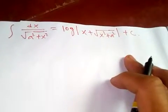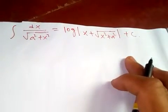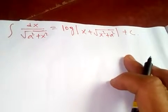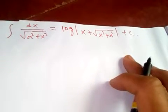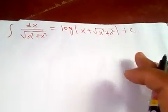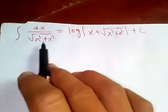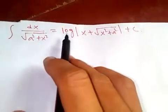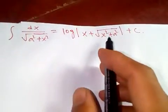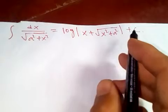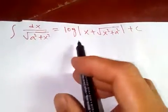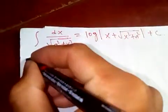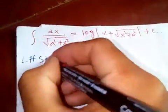Thanks for watching my video today. Let's discuss an important integral — a special integral. This is the integral of dx over square root of a squared plus x squared, which equals log of x plus square root of x squared plus a squared, plus a constant of integration, where a is a constant. We are going to prove this. Let's start from the left-hand side.